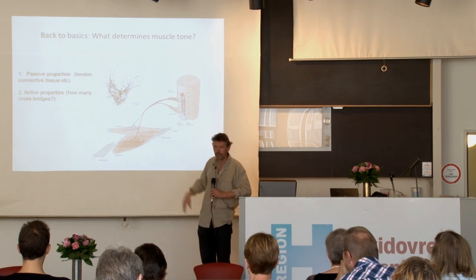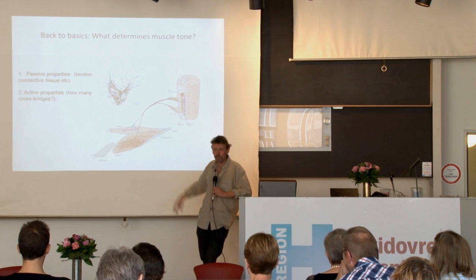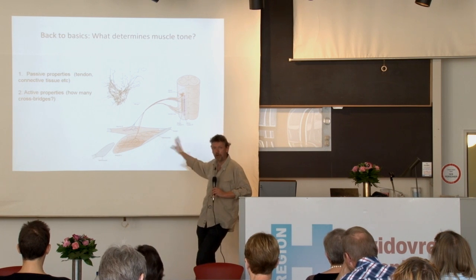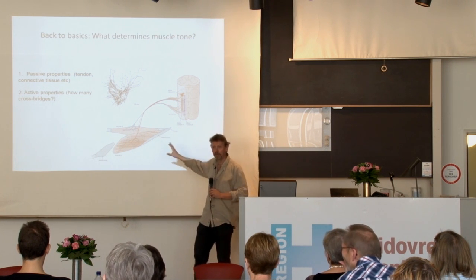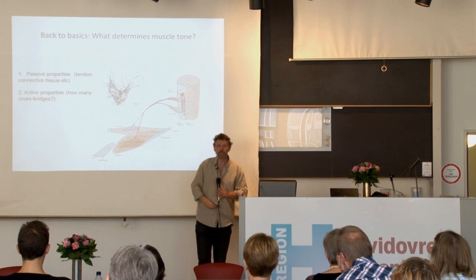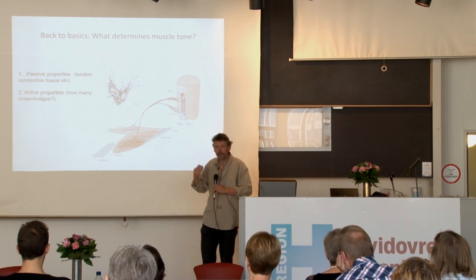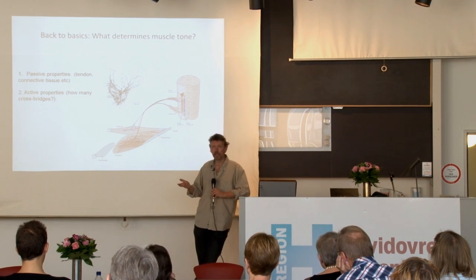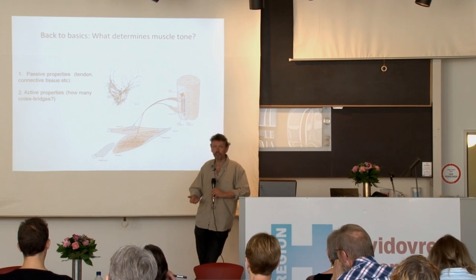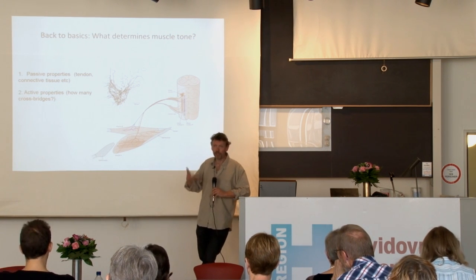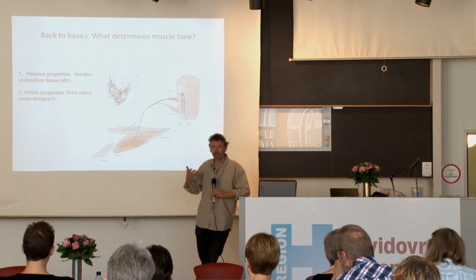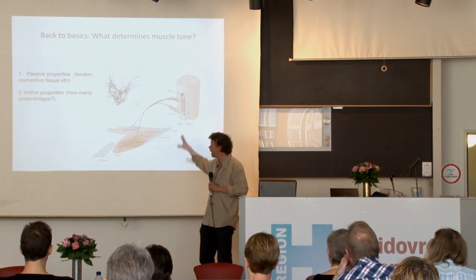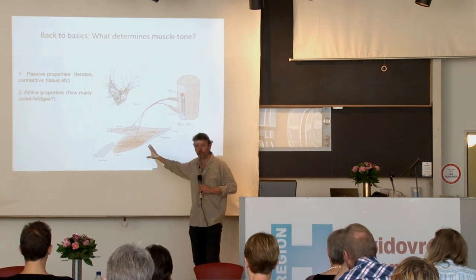The passive properties are all the connective tissue and all the elements inside the muscle spindles and muscle fibers. The active properties are basically how many cross bridges are being formed in that muscle by the activity from the nervous system. That activity can be coming through reflex mechanisms, voluntary activation, or involuntary activation that the patient cannot control but which is not precisely reflex mechanisms. All of that contributes to what we measure in the end.